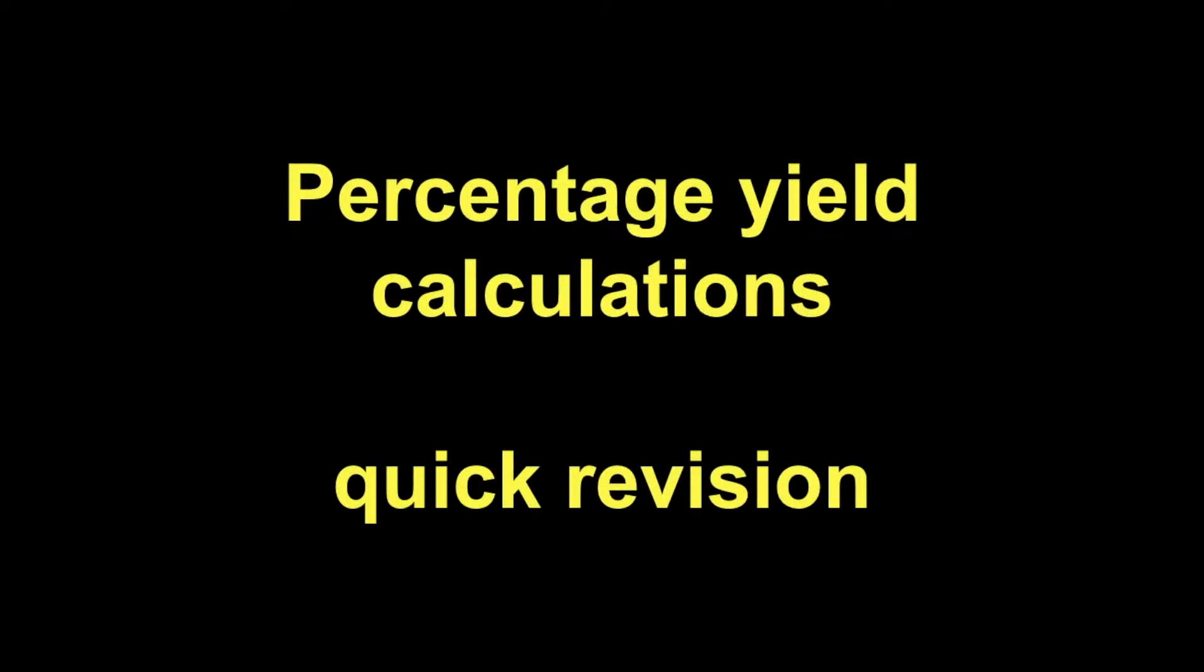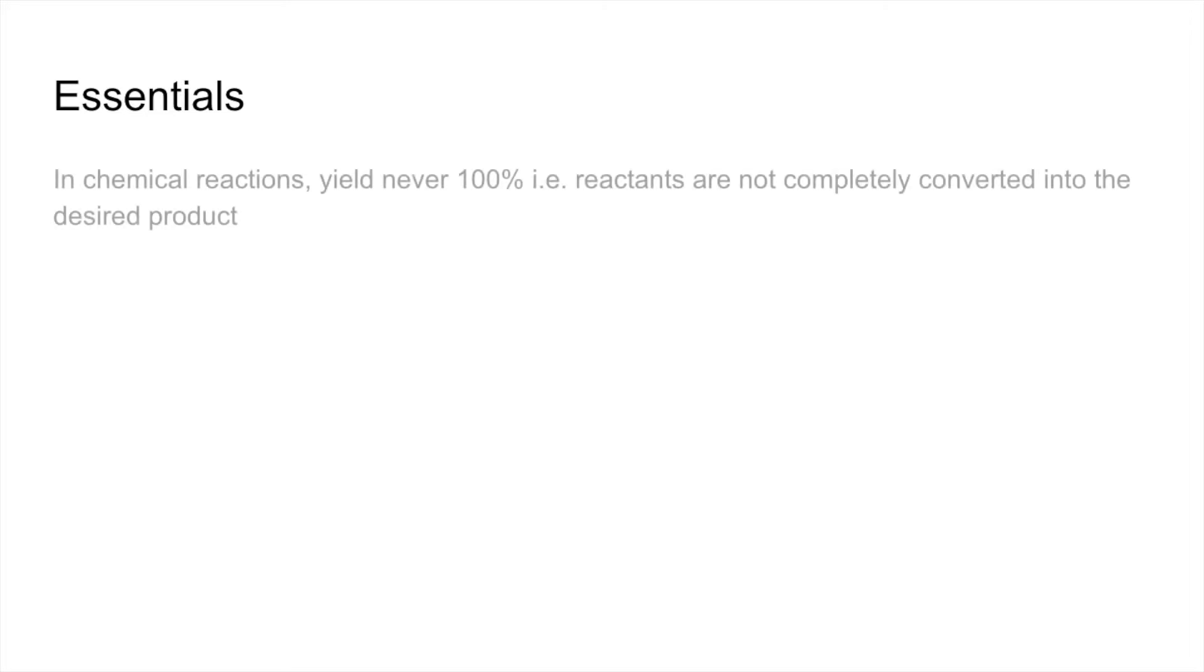Quick revision video on percentage yield calculations. Starting with essentials: in chemical reactions, yield is never 100%, meaning reactants aren't completely converted into the desired product.